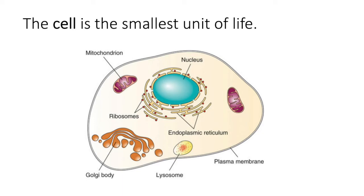The cellular level of organization is probably one of my favorites because we talk about a lot of cells this semester. The study of cells is actually called cytology, and we talk about cells in every single organ system. We talk about bone cells — osteocytes — cartilage cells, those are called chondrocytes, and blood cells like erythrocytes and leukocytes.